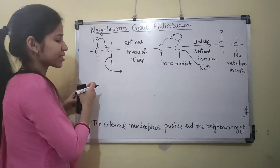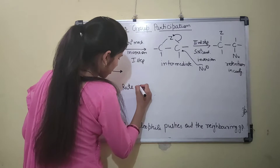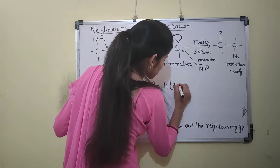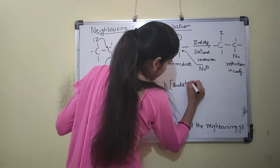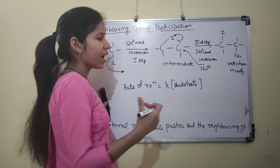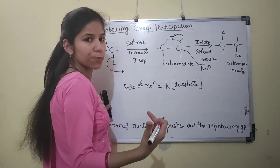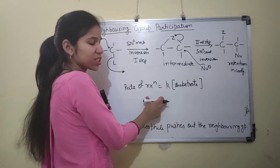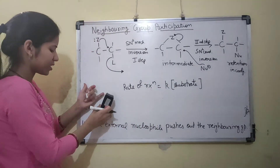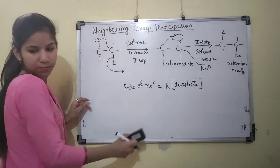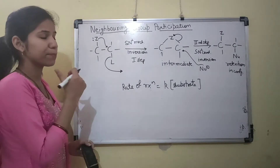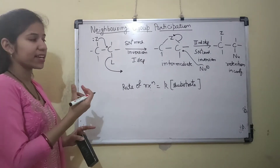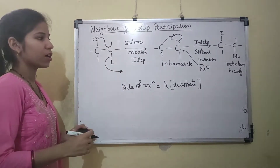The rate of reaction is present, and the rate of reaction equals K times substrate. The external nucleophile does not participate in the reaction at the slow step, so the rate of reaction is K[substrate]. This rate enhancement by the neighboring group is called anchimeric assistance, and the reaction is called an anchimeric-assisted reaction.